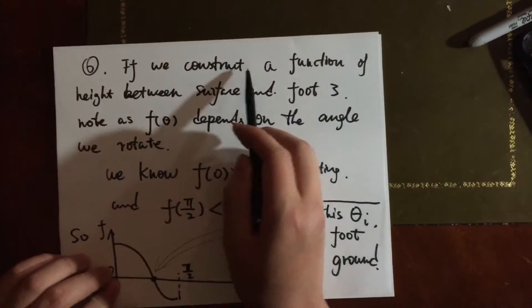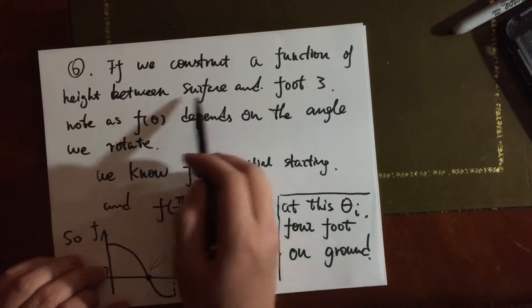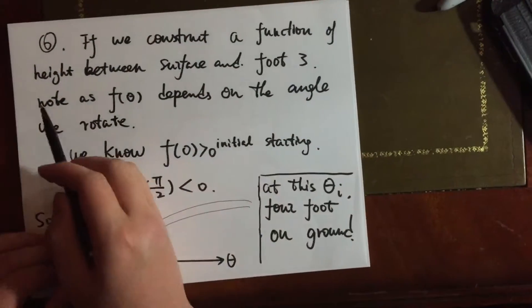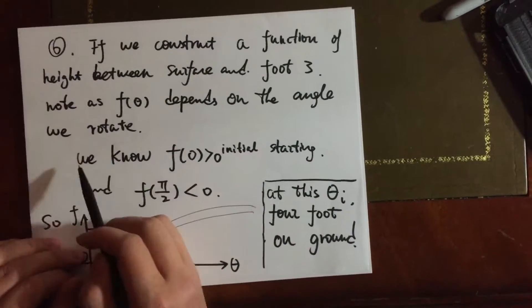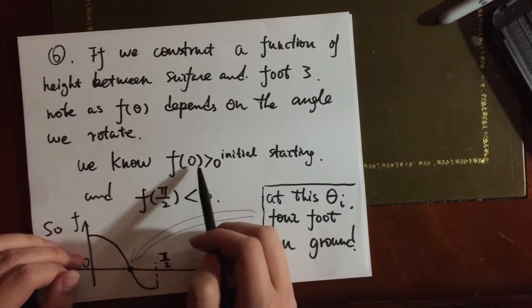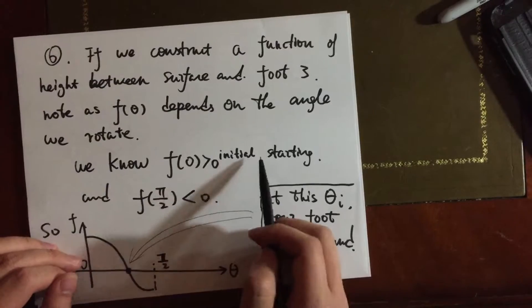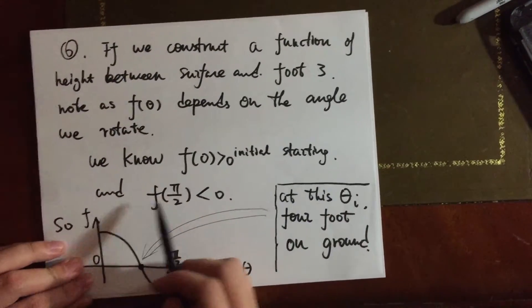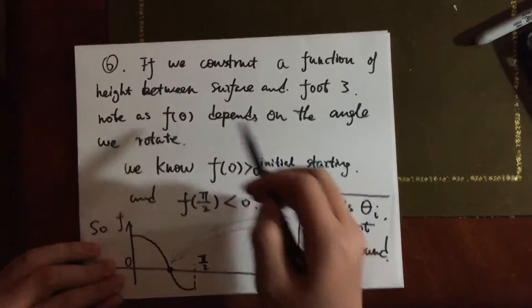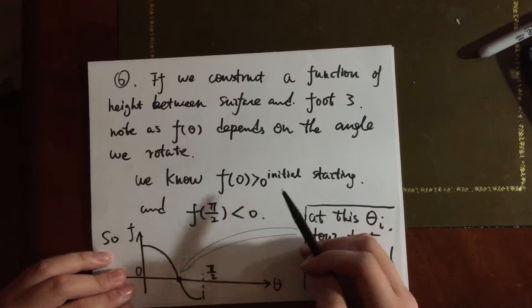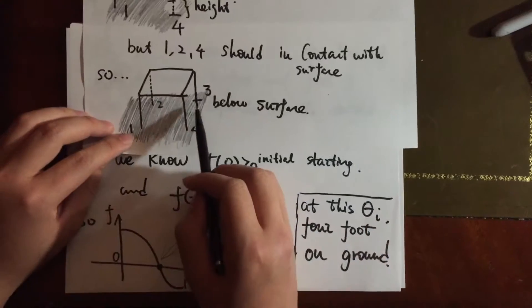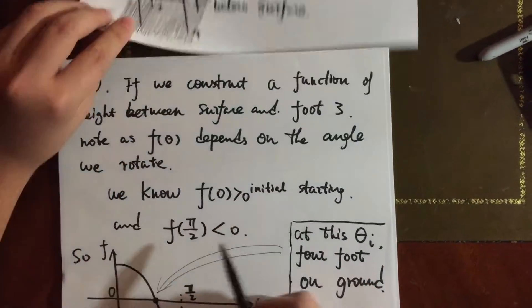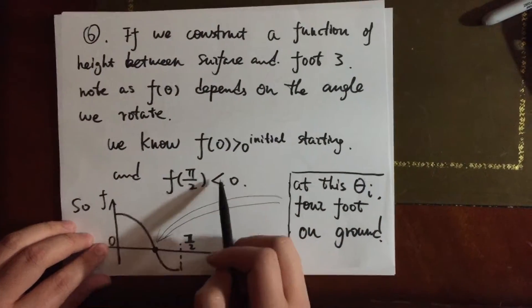So if we construct a function of height between surface and foot 3, noted as f of theta, depends on the angle we rotate. We know f of zero is greater than zero, which is initial starting point. And f of pi over 2, which is after we rotated 90 degrees, the tip is going into the surface, as it's shown. So that's why the distance between it is negative.